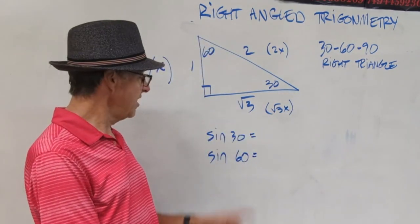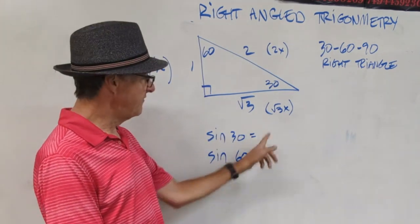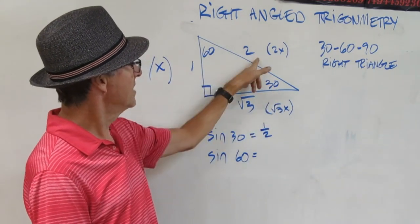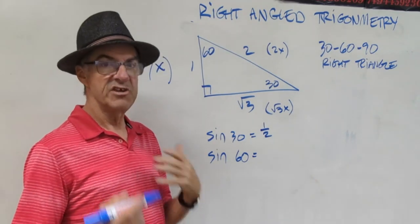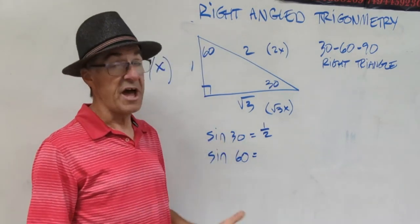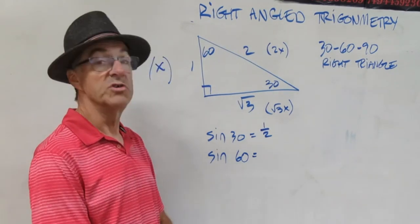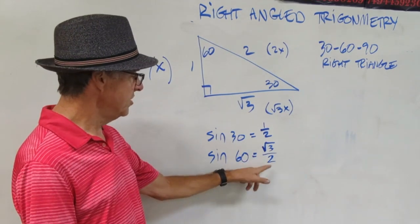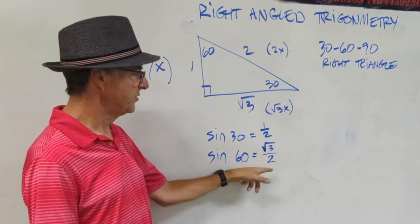Now I want you to figure out what sine 30 is. Write down the value using the diagram. Sine is opposite over hypotenuse, so sine of 30 is 1 half. You can verify with your calculator — sine of 30 degrees is 0.5. Now find sine of 60. Sine 60 is root 3 over 2. Here with our 60 degree angle, opposite over hypotenuse is root 3 over 2.